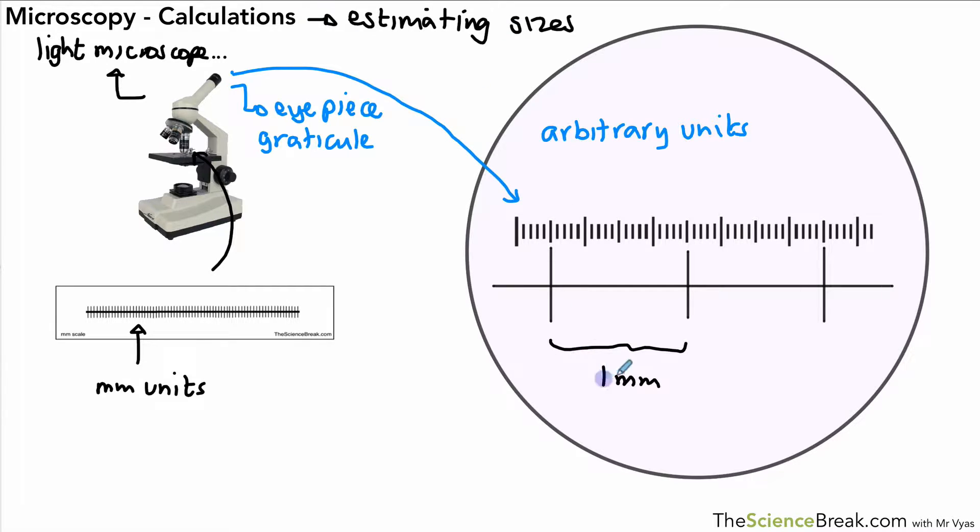There's one millimeter and we can work out how many of our arbitrary units are in that one millimeter. In this case I've got 20, 20 arbitrary units in one millimeter. So if I know that there are 20 units in one millimeter, I can work out how much each of those arbitrary units is in millimeters.